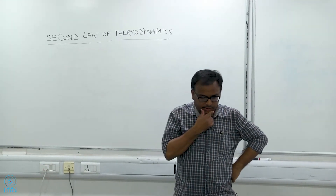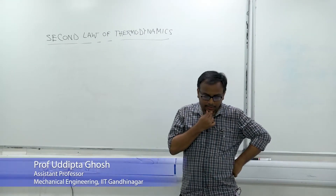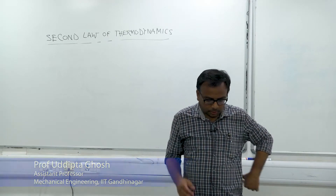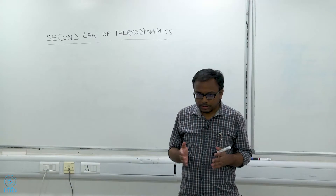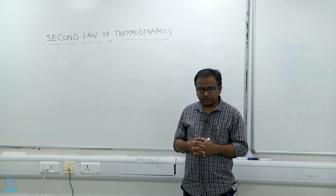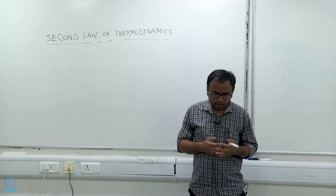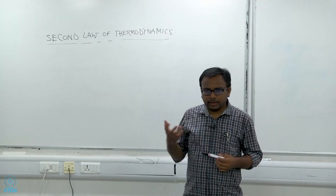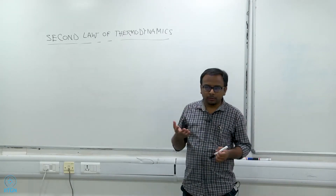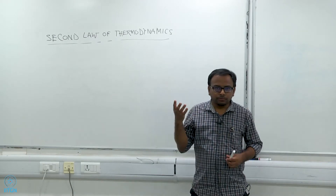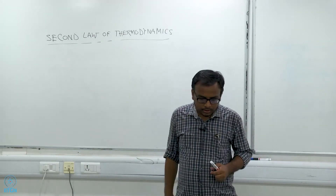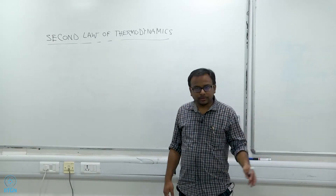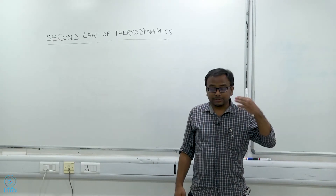Welcome back. We have discussed the Kelvin-Planck and the Clausius statements of the Second Law of Thermodynamics. The Kelvin-Planck statement talks about heat engines and the Clausius statement talks about a refrigerator or a heat pump. The Kelvin-Planck statement basically tells you that you cannot have a heat engine which is 100 percent efficient, and the Clausius statement tells you that you cannot have a refrigerator which has infinite COP.